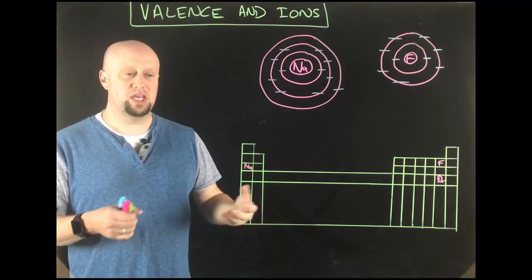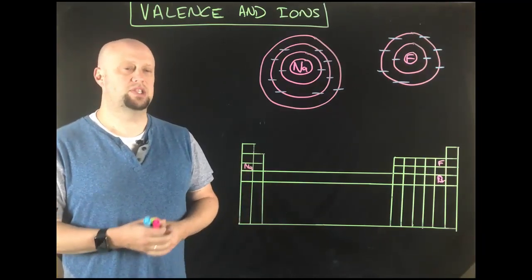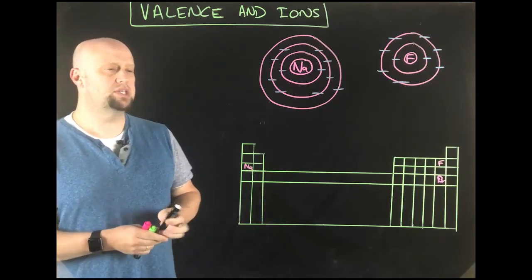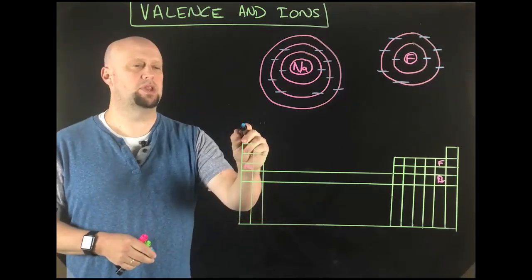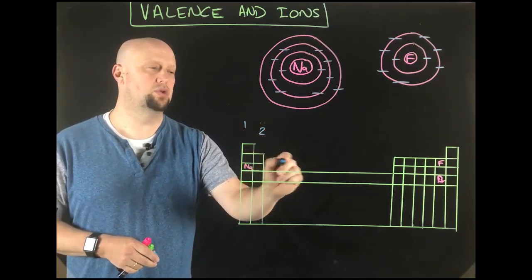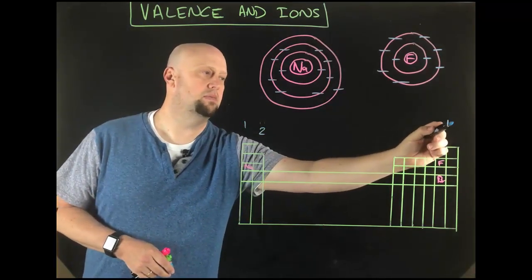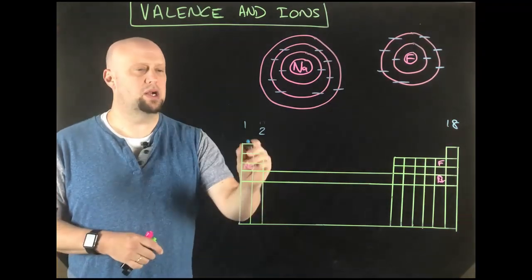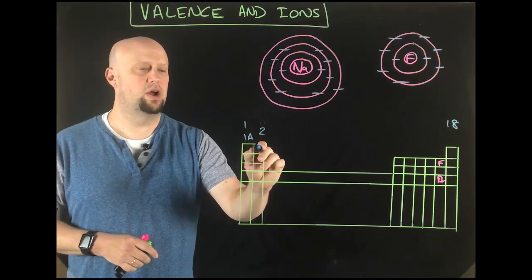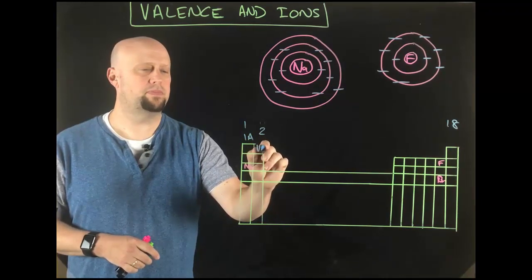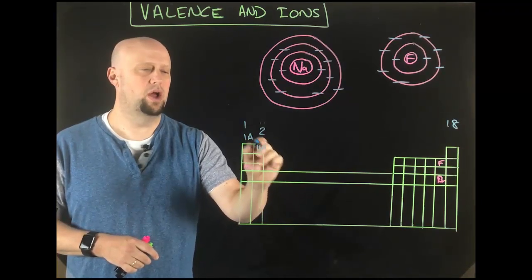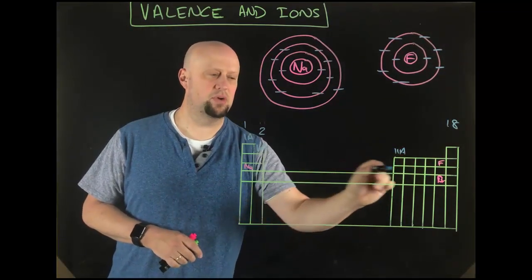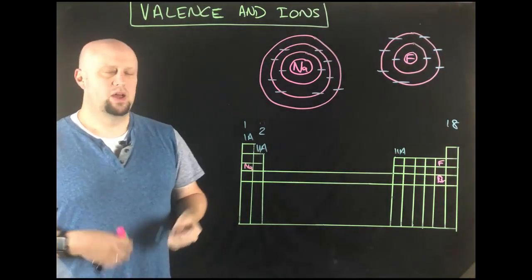That gives you the easy way to immediately tell what the valence number is for any given atom. If you look at a periodic table, the groups were numbered 1 through 18, but if you're looking at a good periodic table, you also noticed they were given Roman numerals — 1A, 2A, 3A — and then you would see B. Since you're only worried about S and P's for valence electrons, you're just counting across; there are really only eight possibilities.